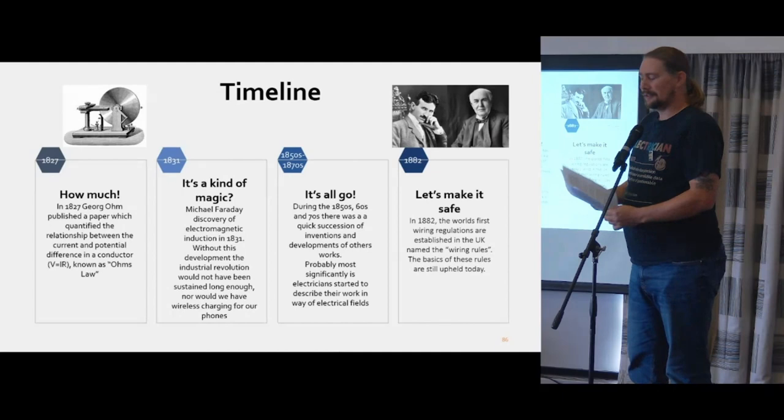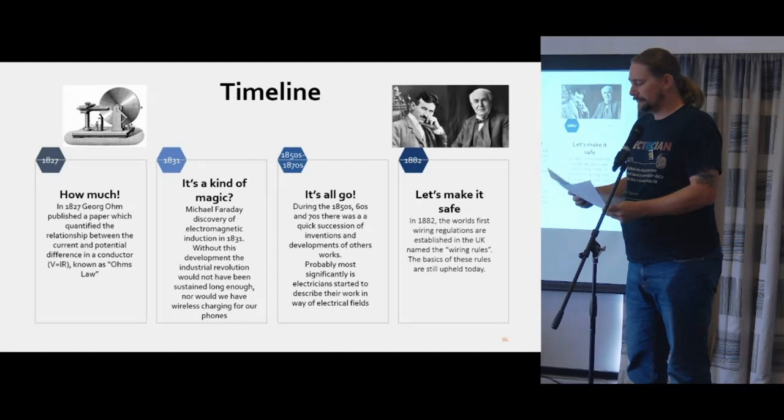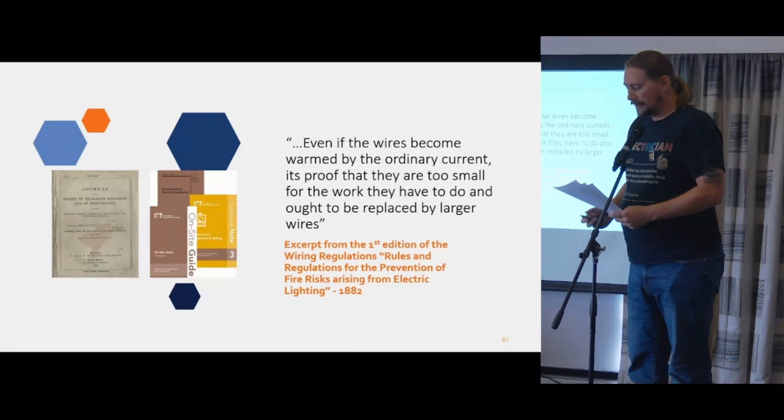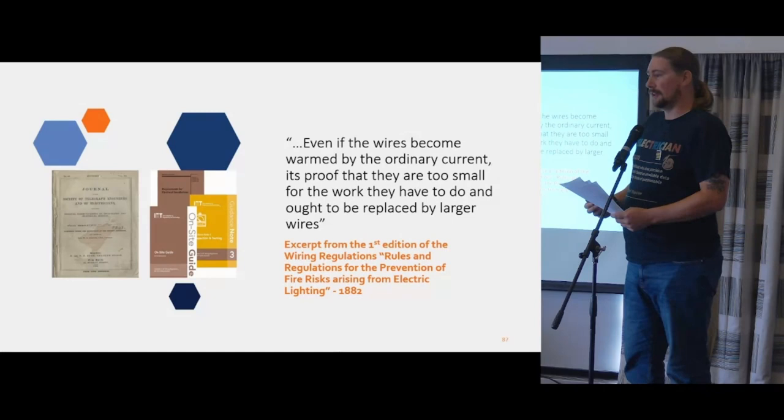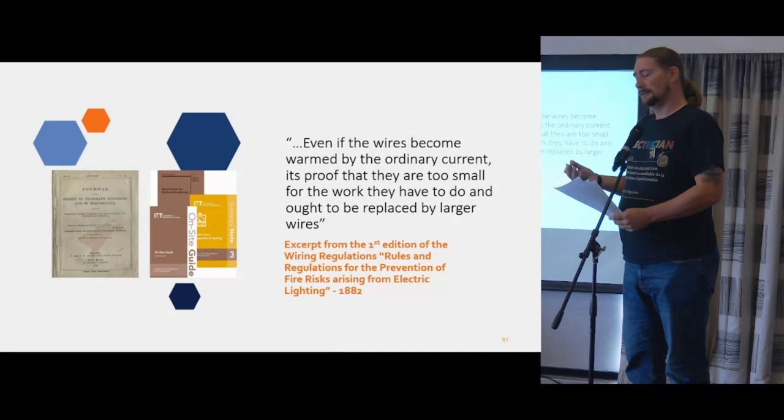Then it brings us to the dreaded government. People were getting seriously hurt. The first death sentence had been carried out using electricity. So they brought in the wiring rules. What the wiring rules stated was, even if the wires become warmed by the ordinary current, it's proof that they are too small for the work they have to do and not to be replaced by larger wires. Thankfully, we no longer have to just touch a wire. We have technology that can do it. But it is still the most reliable method of testing. If the wire gets hot, you know it's too small. You need to isolate it and change it. Thank you. Any questions?